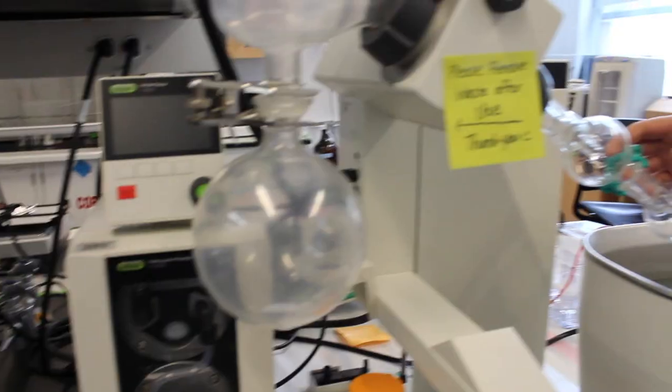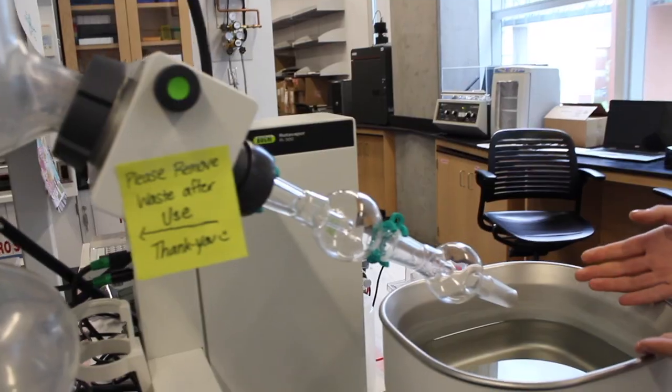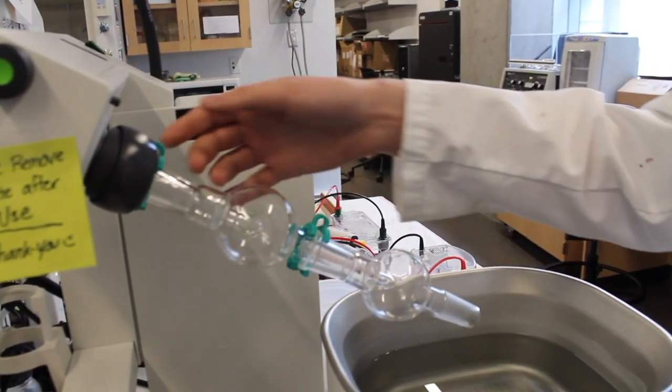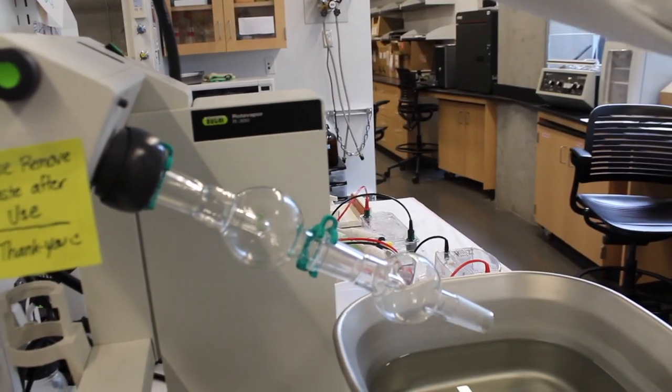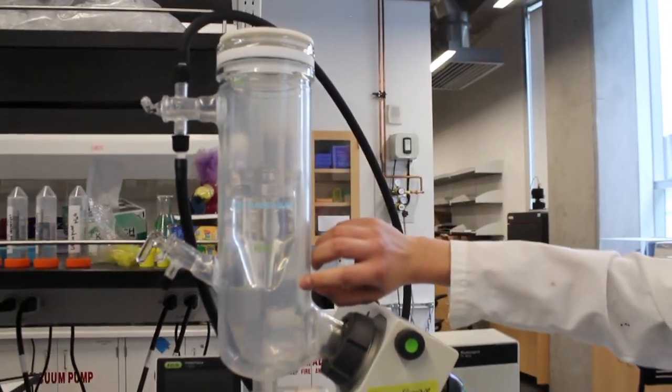Key parts of the Rotovap are the heating water bath, the round bottom flask with solvent collection, the bump trap held together using grease and a keck clip, and a cold finger where solvents condense.